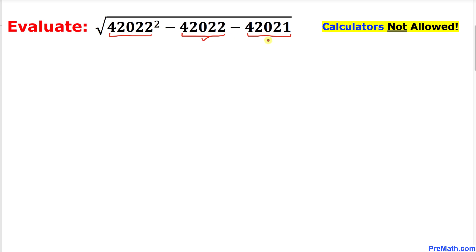So we can tweak this one as 42022 and then minus one. In this next step, I have tweaked this 42021 as 42022 minus one, and the rest is the same.